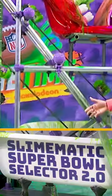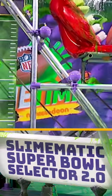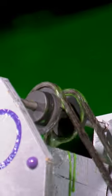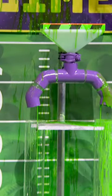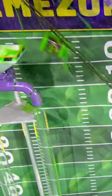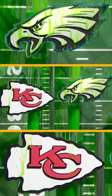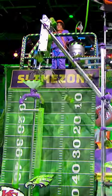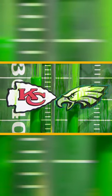It all falls into the slime tub, and that activates the slime conveyor belt. From the slime conveyor belt to the funnel, from the funnel to the tube towers, and then the first logo to reach the slime zone is our Super Bowl winner!